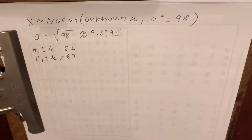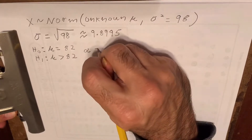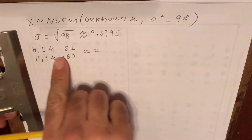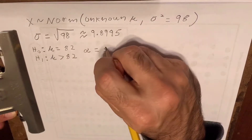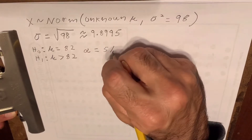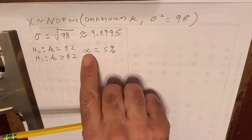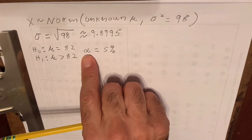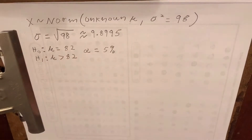We should always state the significance level of the test very close to the hypotheses, so that your professor knows that the significance level alpha and the hypotheses are related to one another. The significance level alpha is 5%.